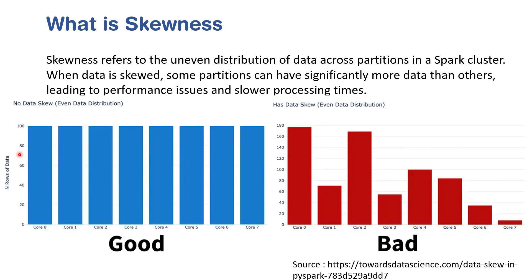Here's an example: on the y-axis we have the number of rows of data, and on the x-axis are the partitions. This first chart shows an even distribution across partitions — this is the ideal situation, but it doesn't happen in real time. The second chart shows skewed data where there are uneven partitions — some have a lot more records and others have very few. This is called skewed data.